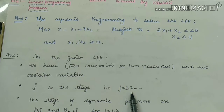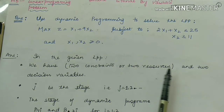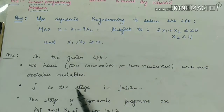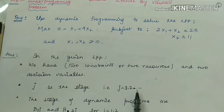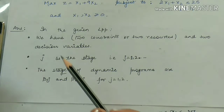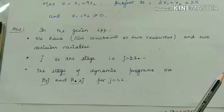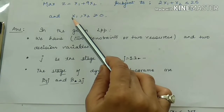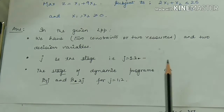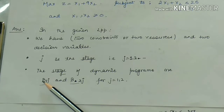The two constraints are also called two resources. We have two constraints or two resources depending on two decision variables. Since two decision variables are there, we will consider two stages — J always represents a stage, so J equals 1 and 2. We have also assumed two dummy states, β1J and β2J, for J equal to 1 or 2.